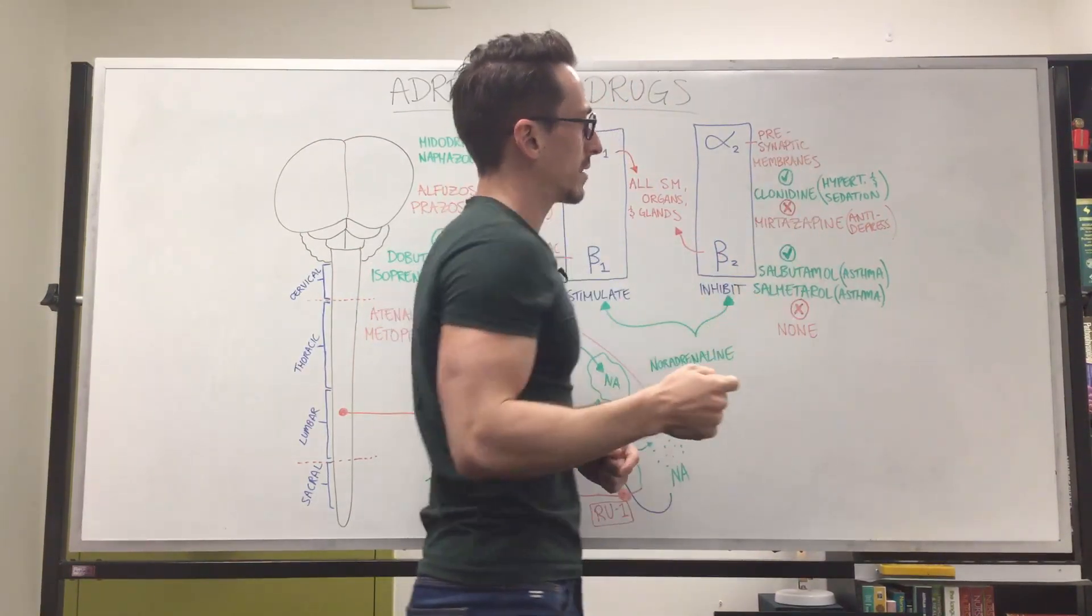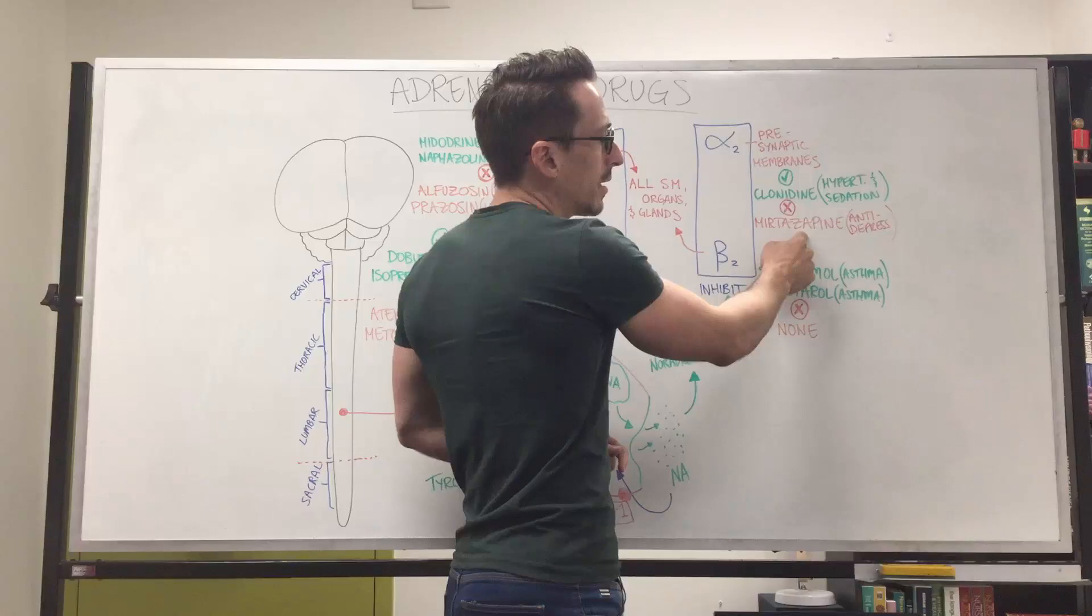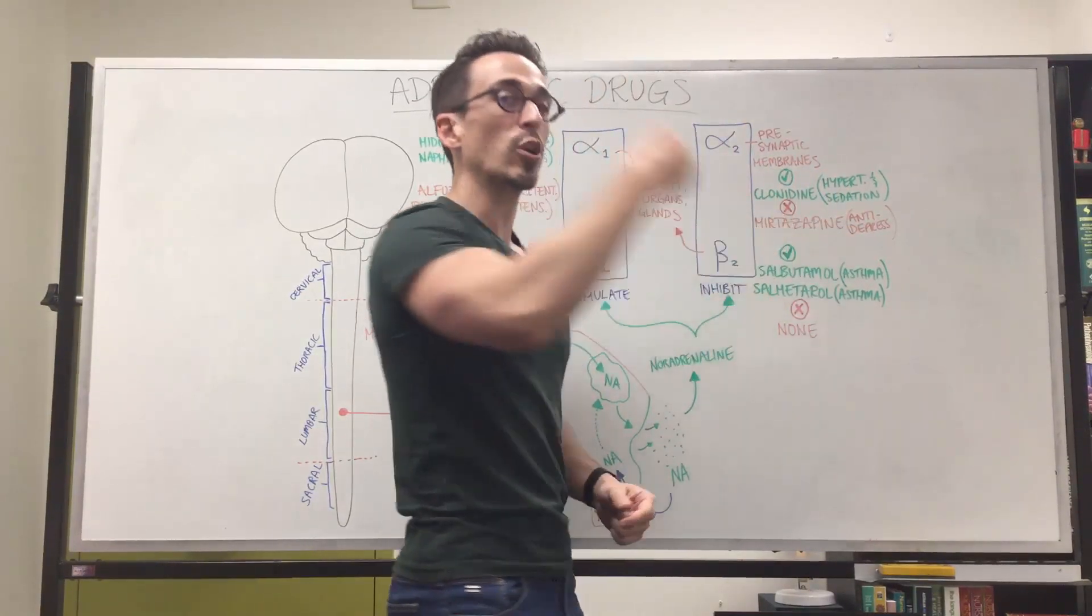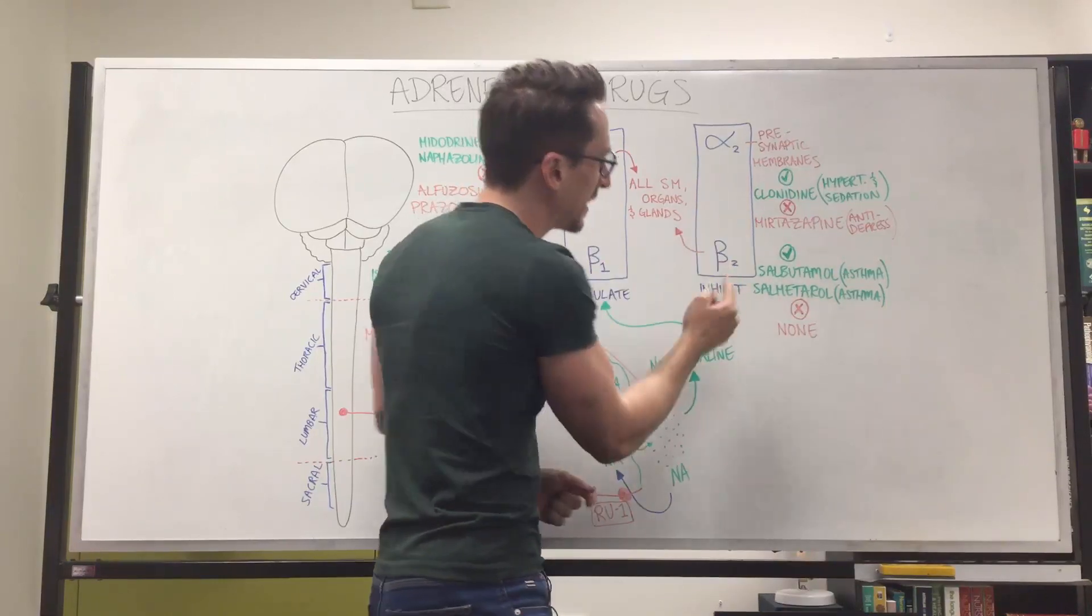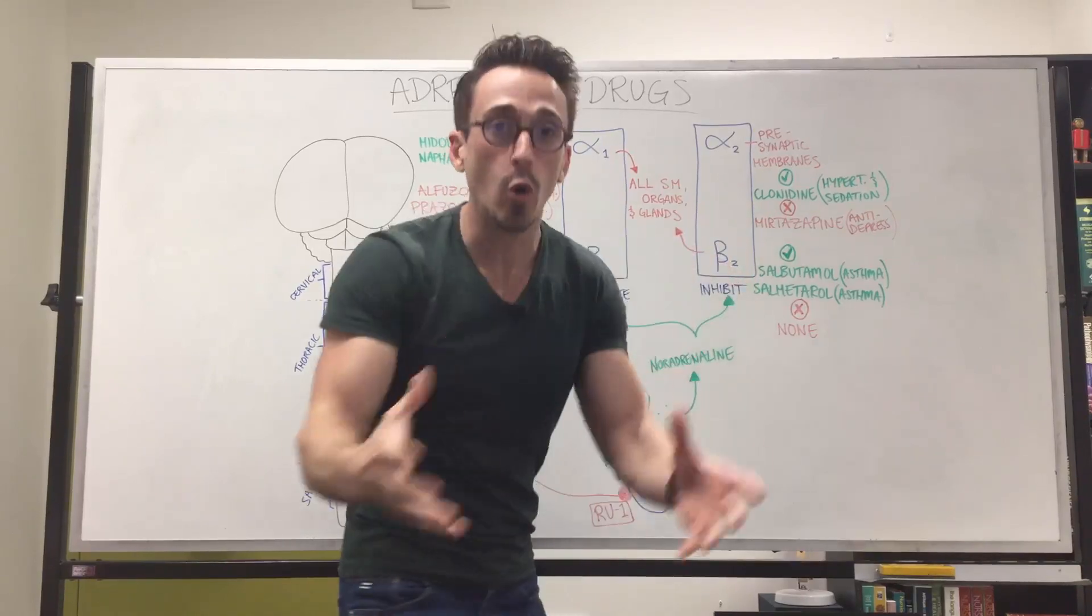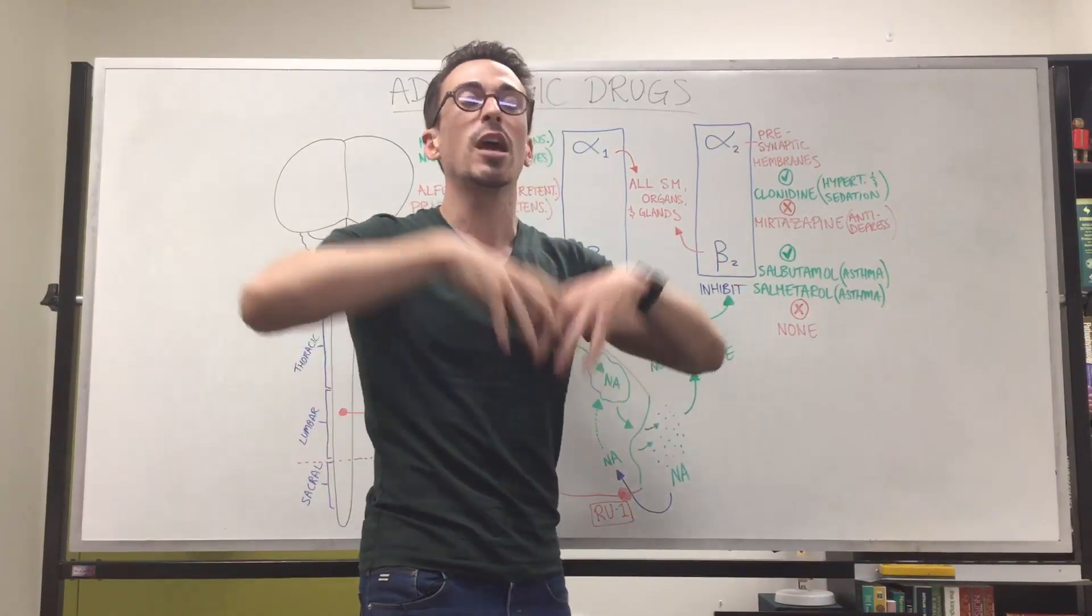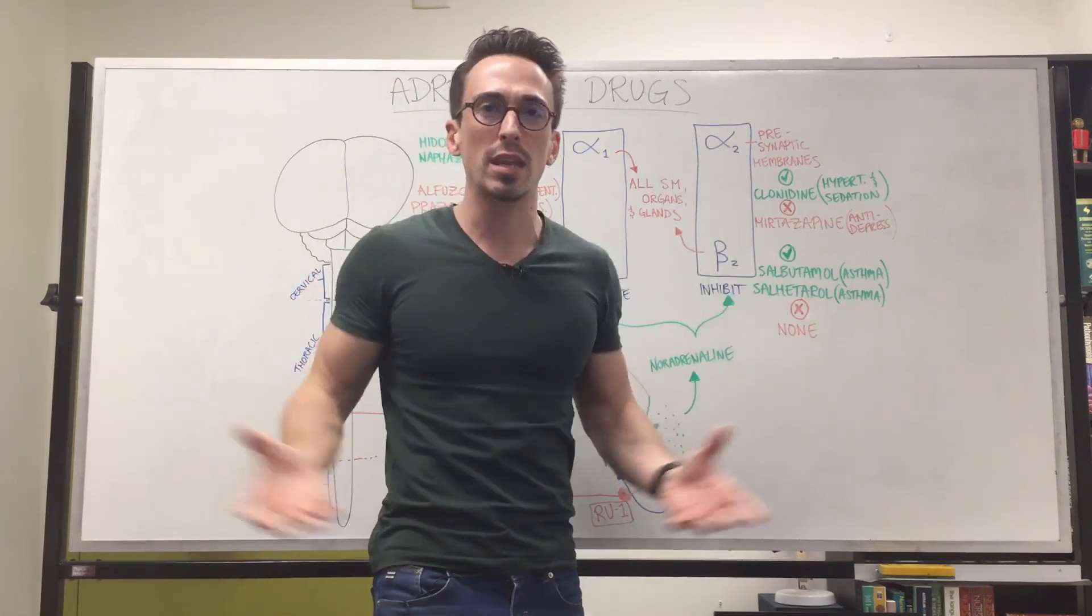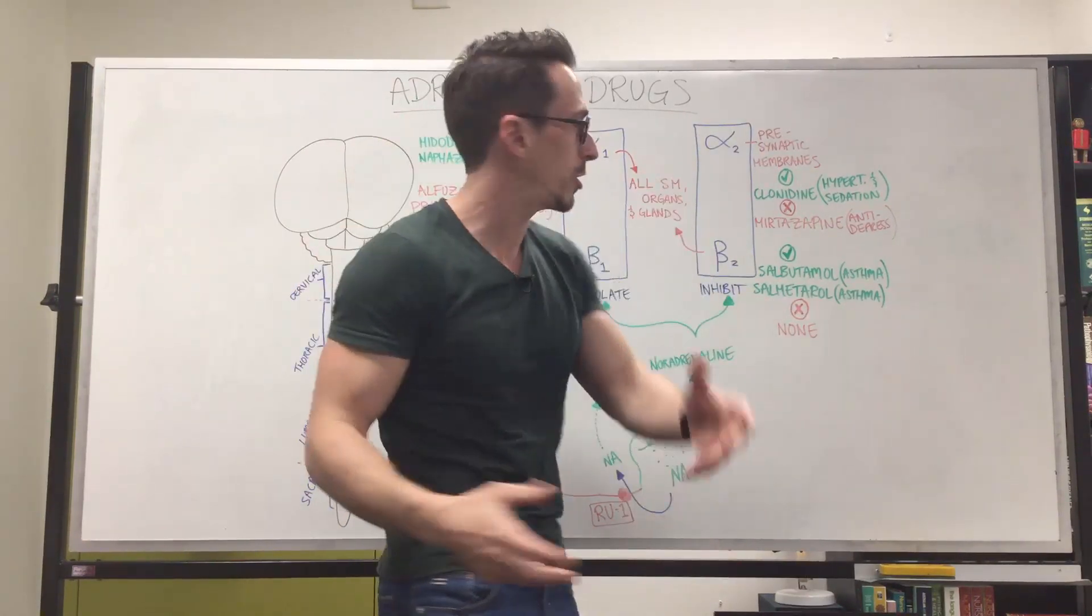We've got an antagonist. So if it's antagonizing or blocking alpha-2, it's inhibiting an inhibitor. So it activates the presynaptic neurons of all the sympathetic neurons, which means you have this overall sympathetic effect. And this overall positive sympathetic effect can be used to treat depression.